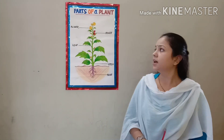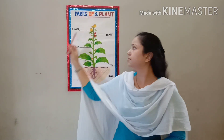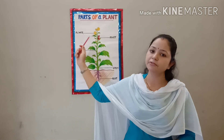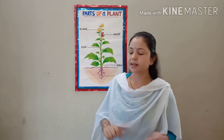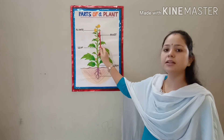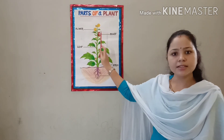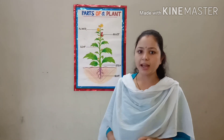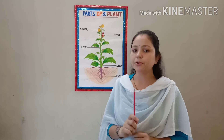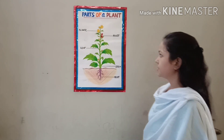Flower. Flowers are the most colorful parts of the plant. They come in different shapes, sizes, colors and fragrance. Flower is also called the reproductive system of the plant.